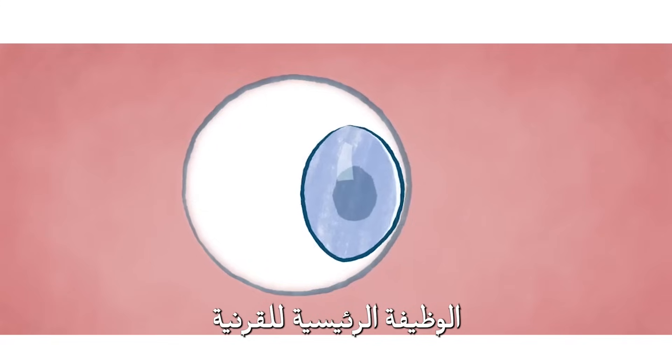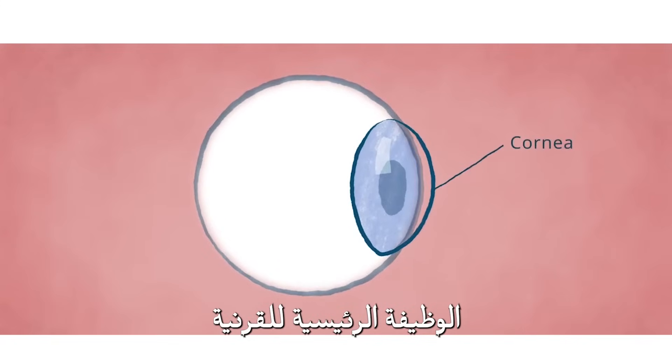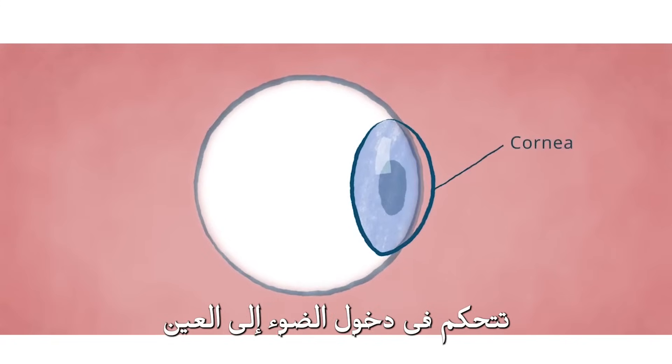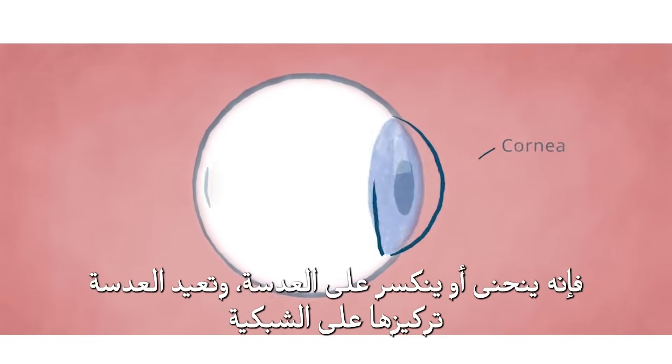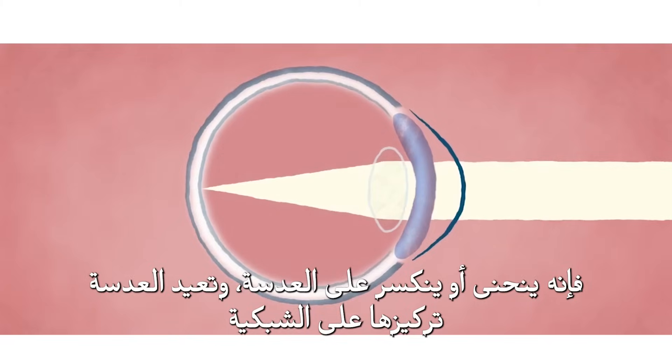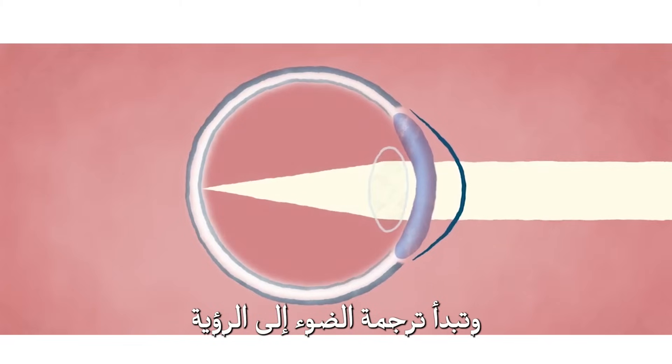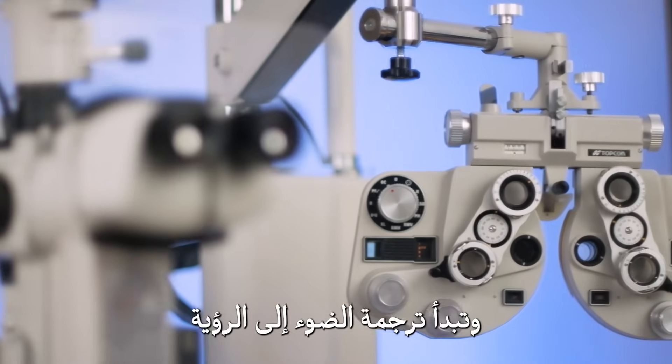The main function of the cornea is to refract or bend the light from outside the eye in order to focus onto the retina, resulting in good vision.